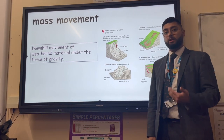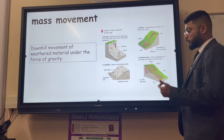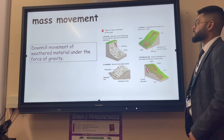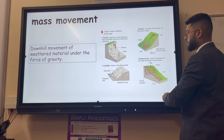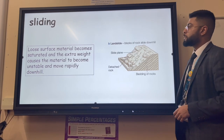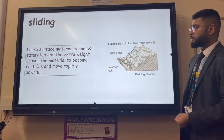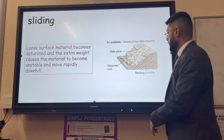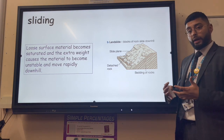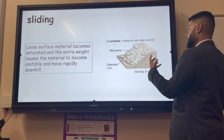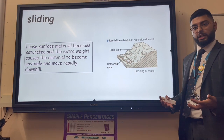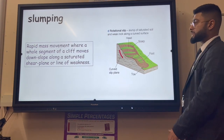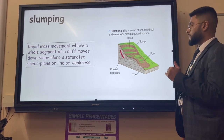Mass movement is the downhill movement of weathered material under the force of gravity. We have four types: rock fall, mud flow, landslide, and rotational slip which we usually call slumping. Sliding occurs when loose surface material becomes saturated - lots of rain onto a slope means the extra weight of absorbed water makes it unstable and it moves downhill. This is a big risk at live regions.